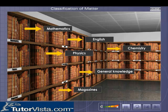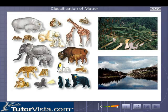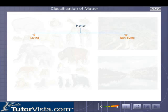We know that matter is anything that occupies space and has weight. In fact, anything that you see around you is a form of matter. These forms of matter can be broadly classified into living and non-living things. The living and non-living things can further be classified. Let's see how.